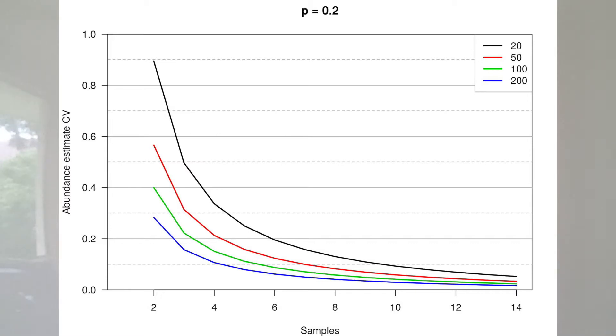The other thing to note is we've got different curves, different lines on this plot, and each line is for a different population size. We get a larger coefficient of variation when we have a smaller population size. So our degree of precision, our level of precision in our estimate, also depends upon the population size.